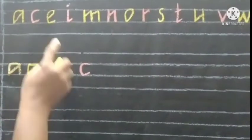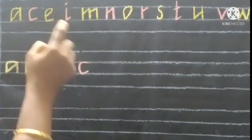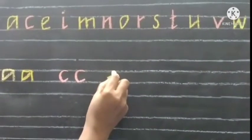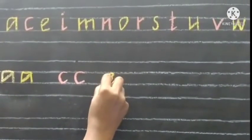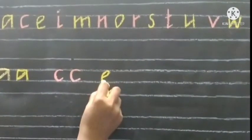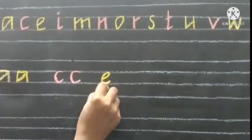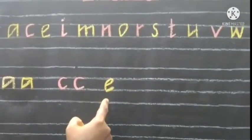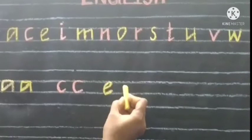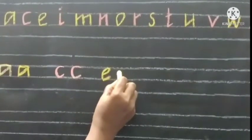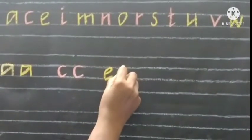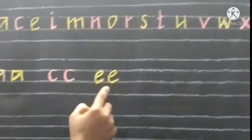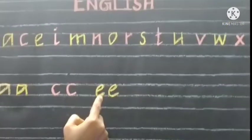Next letter is E. We have to start in the middle, go up and add a small curve and slant ending. This is E. Write once again: start in the middle, go up, add small curve and slant ending. This is E.